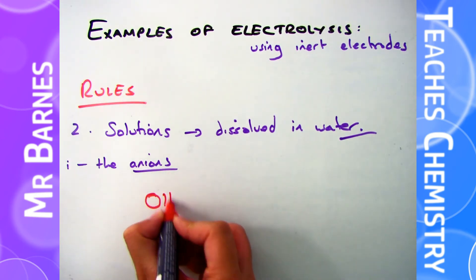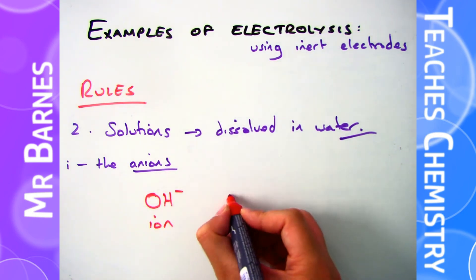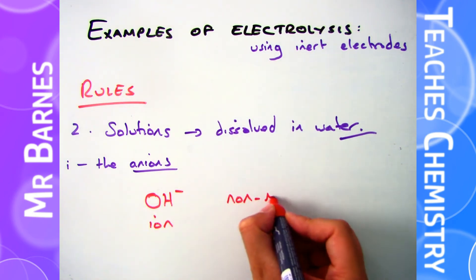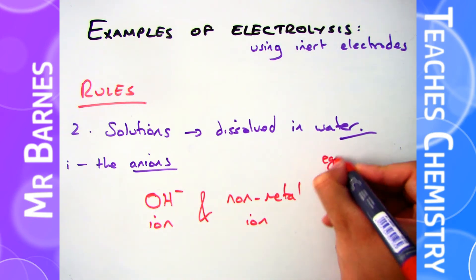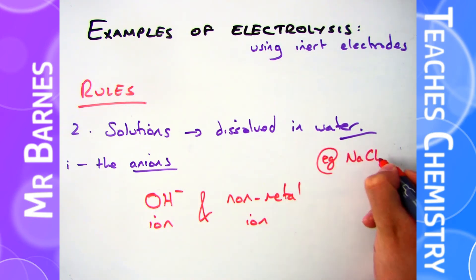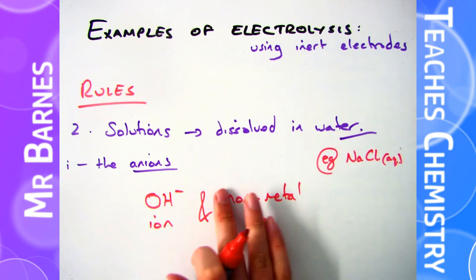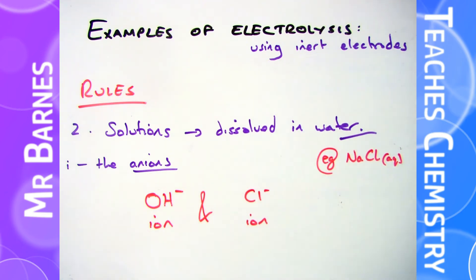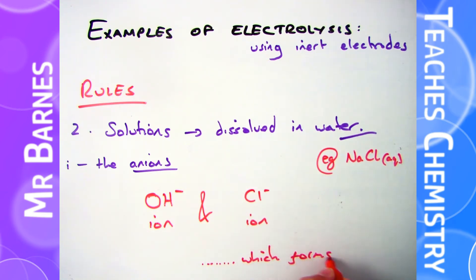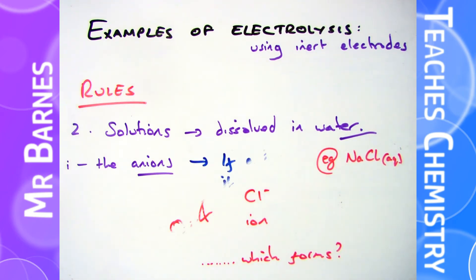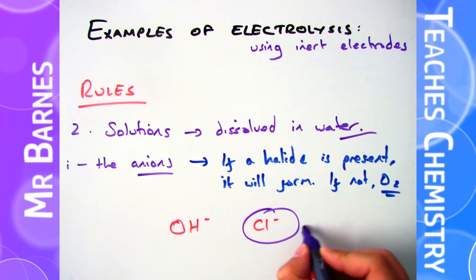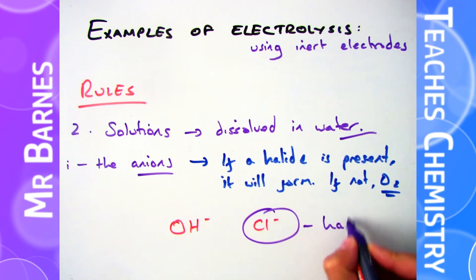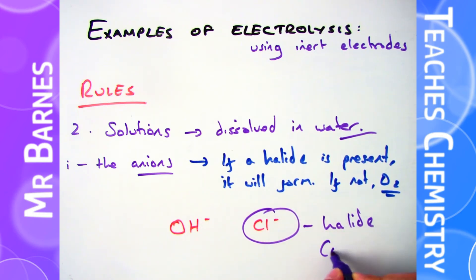When it comes to the anions, you will have your non-metal but you'll also have an OH- hydroxide ion. So you have to figure out which one is going to form. Looking at the example of sodium chloride, you're either going to have the OH- ion going to the anode or you're going to have the Cl- ion going to the anode. The simple way of remembering it is: if there is a halide present, that will form first.